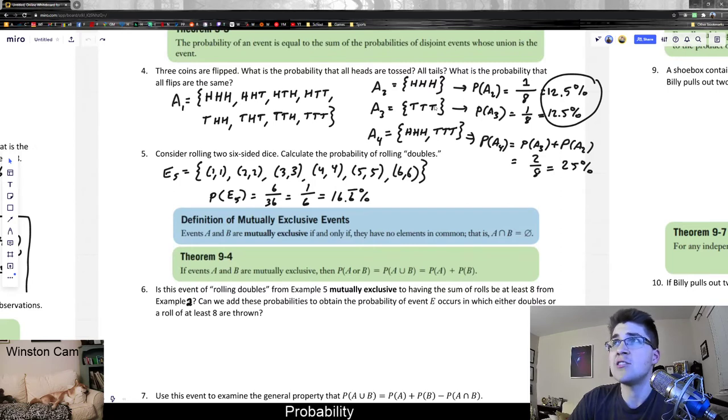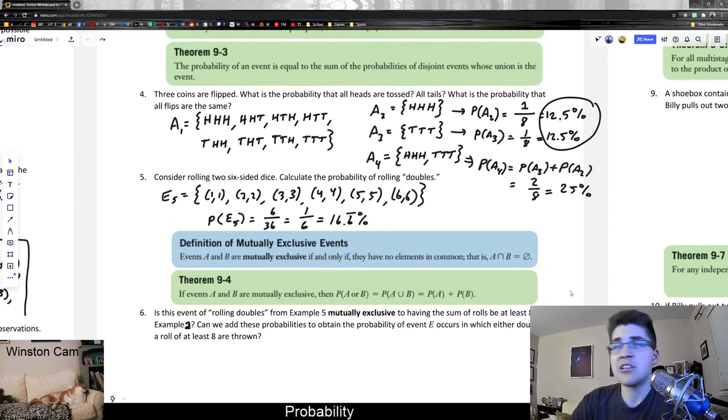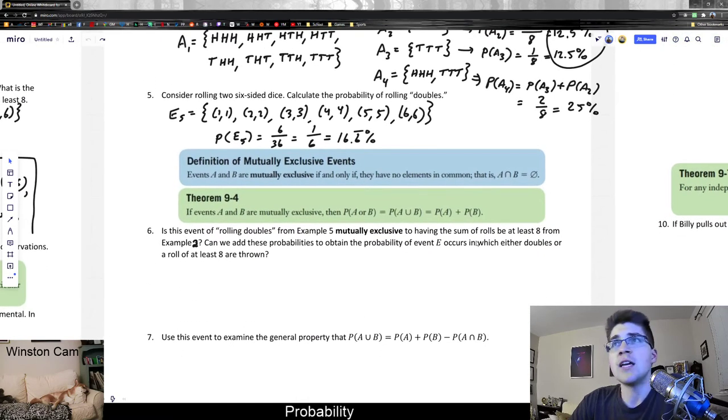So really, this A4 here was A2 union A3, which is equivalent to A or B occurring. And it says it's equal to PA plus PB because they're mutually exclusive. And because they were each individual probabilities that had nothing to do with each other, we can find the joint probability by simply adding them together as we did. So really, it's just another way of saying what 9-3 did. It's just using the set notation.